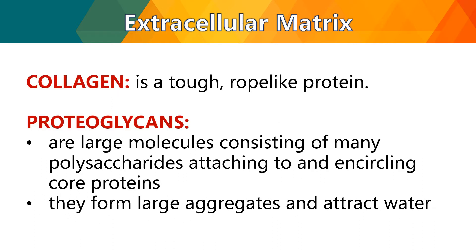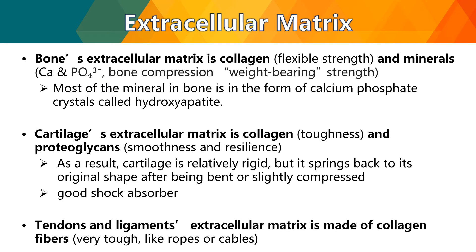To further understand the components of the extracellular matrix, let me define them starting with collagen, which is a tough rope-like protein. In the ECM, you will also see proteoglycans, which are large molecules consisting of many polysaccharides attaching to and encircling core proteins. They form large aggregates and attract water. The bone's extracellular matrix is composed of collagen for flexible strength and minerals including calcium and phosphate for bone compression and weight-bearing strength.